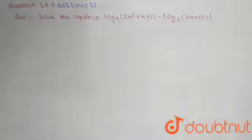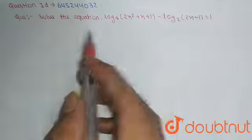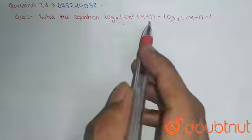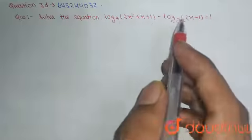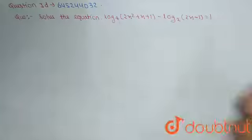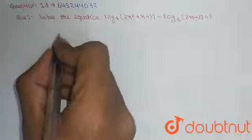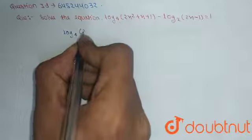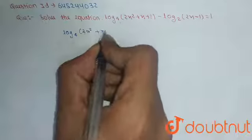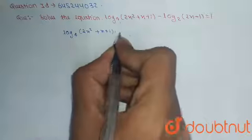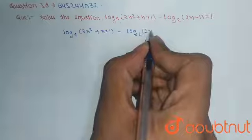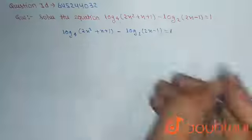Hello friends, our question is we have to solve the equation: log base 4 of (2x² + x + 1) minus log base 2 of (2x - 1), and this equals 1.